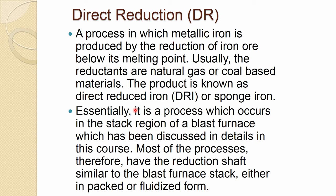The first one, which is quite old, is direct reduction — in short form we call it DR processes. It is a process in which metallic iron is produced by the reduction of iron ore below its melting point. The product would be solid. Usually the reductants are natural gas or coal based materials. The product is known as direct reduced iron or sponge iron — DRI — which is mostly in the solid sponge form.